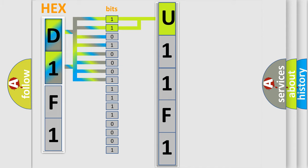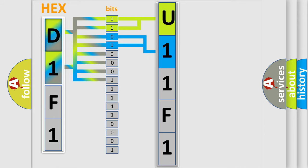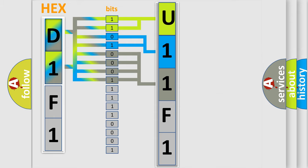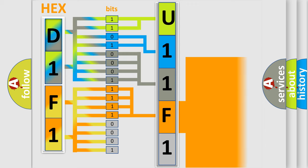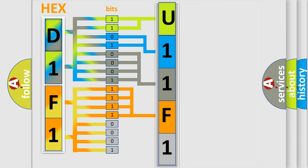The next two bits determine the second character. The last bits of the first byte define the third character of the code. The second byte is composed of a combination of eight bits. The first four bits determine the fourth character of the code, and the combination of the last four bits defines the fifth character. A single byte conceals 256 possible combinations.